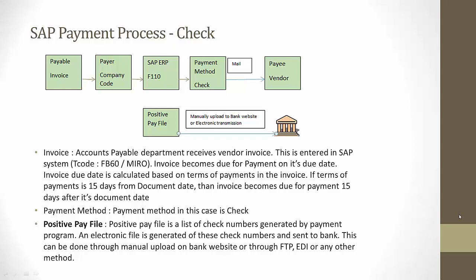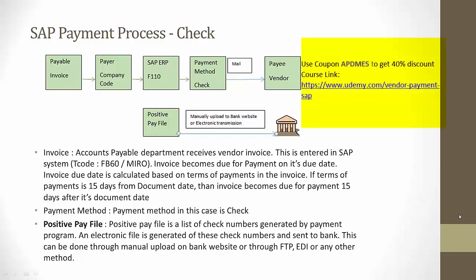The business process starts with receiving the vendor invoices. Once the vendor invoices are received, they are entered in SAP. The transaction code for this is FP60 or MIRO. We will go into detail when we do the actual end-to-end testing in subsequent lectures. Once the vendor invoices are entered in the SAP system, the next step is to run the payment program F110.